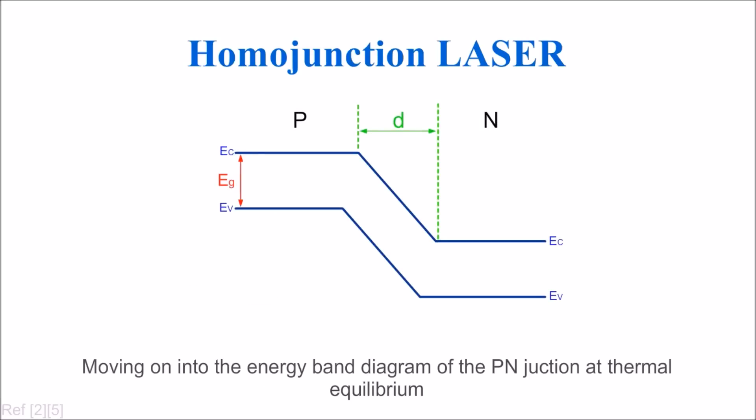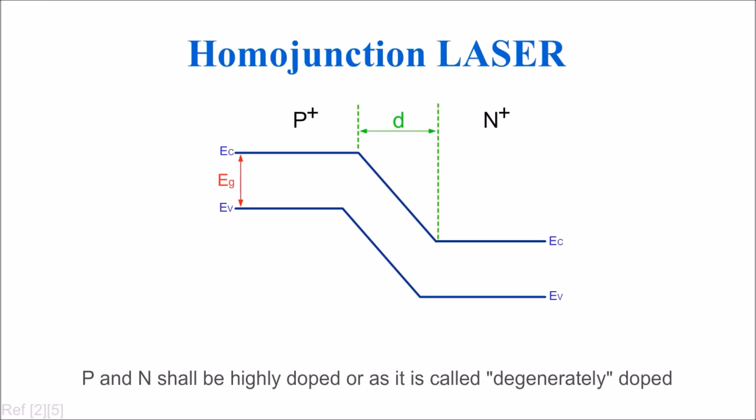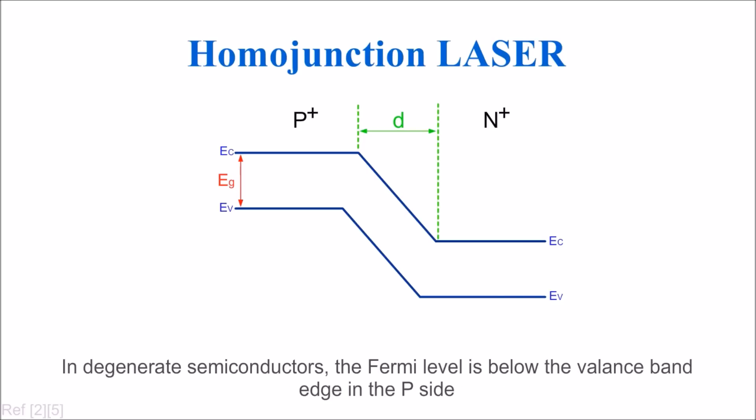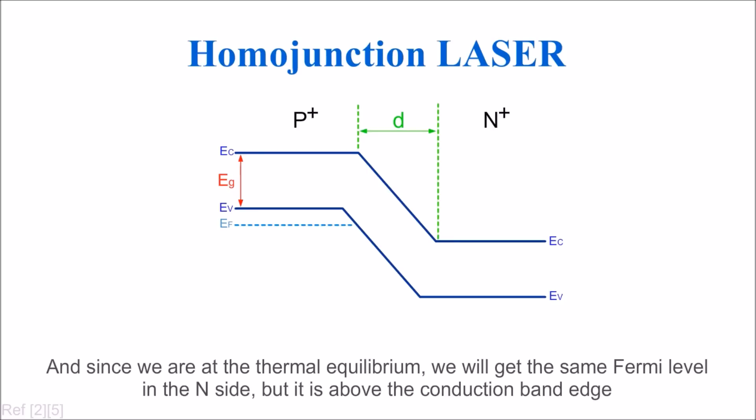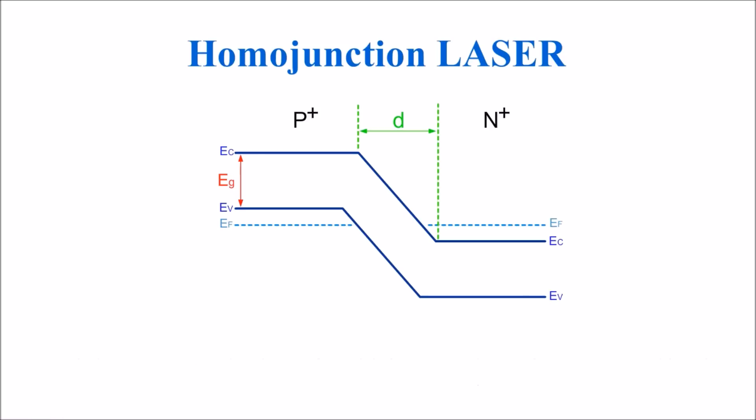Moving on to the energy band diagram of the p-n junction at thermal equilibrium. P and N shall be highly doped, or as it's called, degenerately doped. In degenerate semiconductors, the Fermi level is below the valence band edge in the p-side. Since we are at thermal equilibrium, we get the same Fermi level in the n-side, but it is above the conduction band edge. In both p and n regions, the area below the Fermi level is full of electrons.